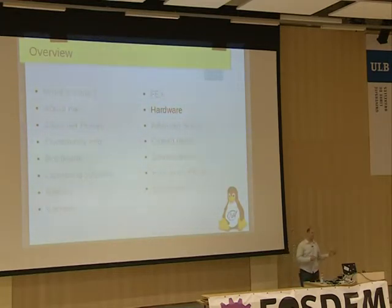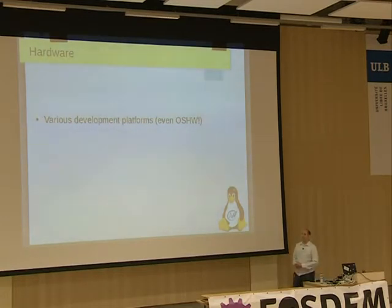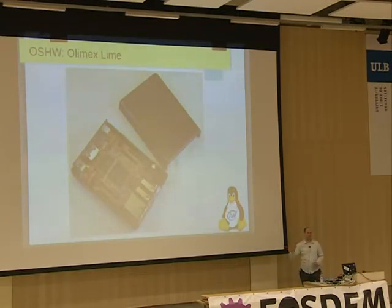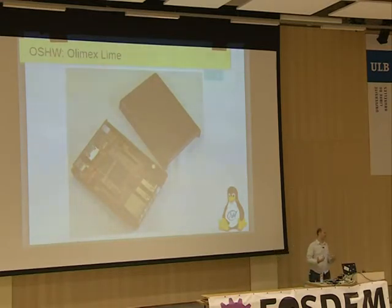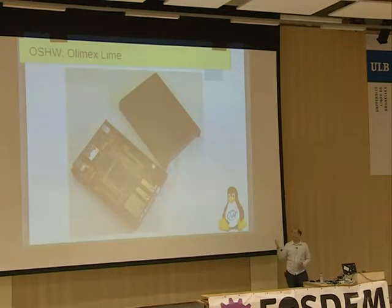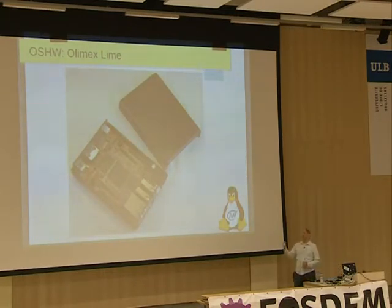Now, all this is interesting and fun, but it's all software. There's always people interested in hardware — what's the fun of software if you don't have hardware to use it with? There are quite a lot of development platforms, including open source hardware platforms. This is the Olimex Lime. It's very interesting to mention that Olimex has a lot of hardware platforms that are open source — you can download the schematics, the bill of materials, everything you need to reproduce it. And it's about the same price as a Raspberry Pi, but for a faster processor. No dependency on a binary blob like the Raspberry Pi, and it's a little bit smaller.